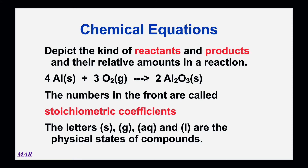The product or products are the pieces to the right of the arrow — the pieces you're going to get out. This is the chemical version of a recipe where we're adding aluminum and oxygen to make aluminum oxide. We know the states of the matter, we know the relative amounts, and we're going to be exploring more about how stoichiometric coefficients can really help the chemist out.